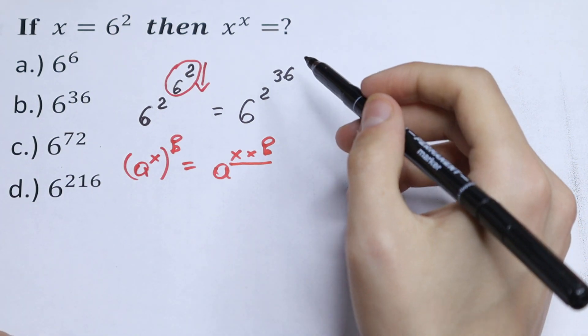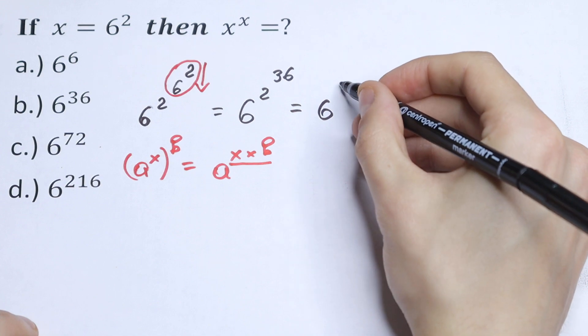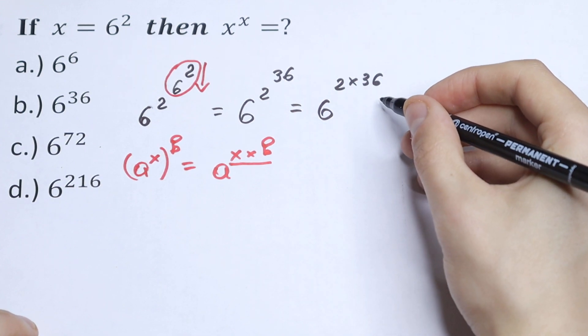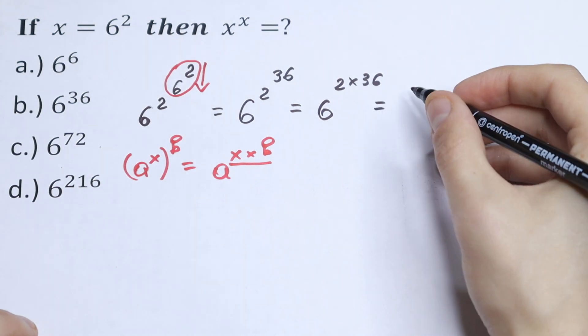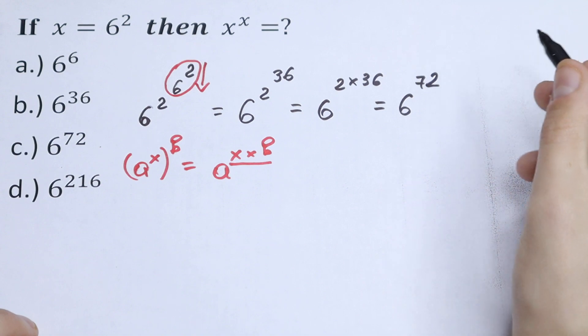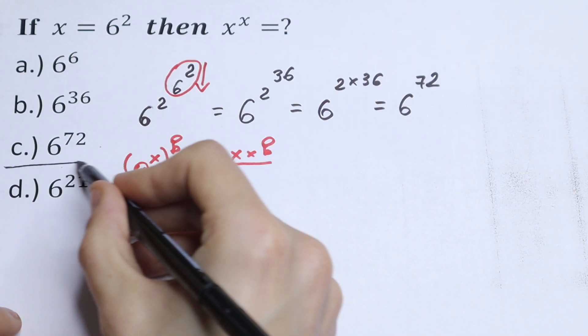And we have the same case right here, so we need to multiply this. We will have 6 to the power 2 times 36. And as a result, we will have that this will be equal to 6 to the power 72. And this is our answer, option c.